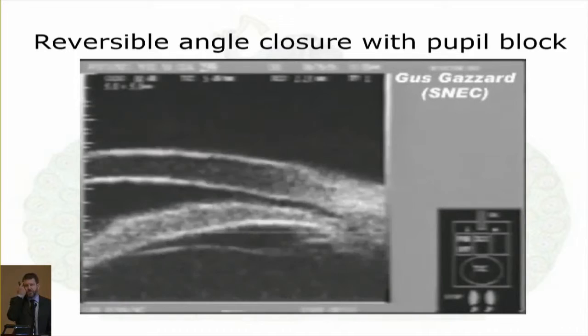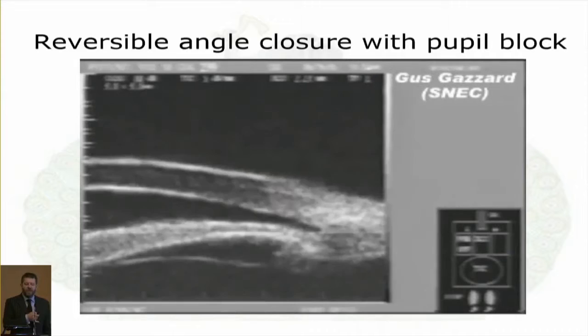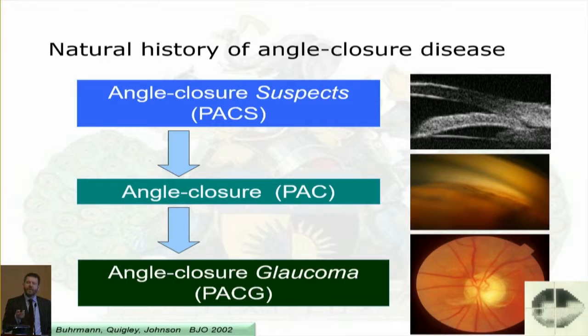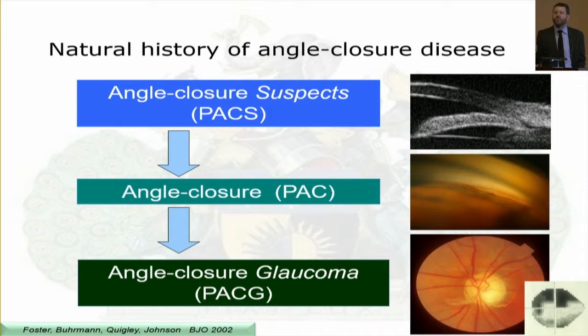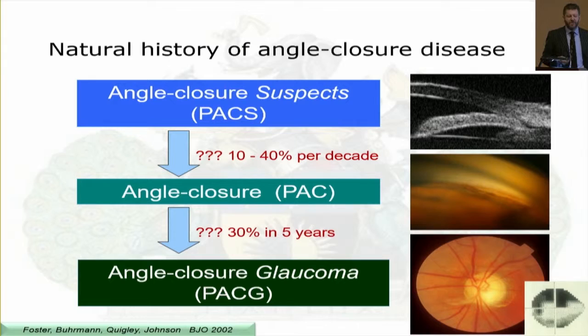We need to be able to do gonioscopy in the dark, because iridotrabecular contact changes very rapidly and exquisitely with illumination levels — a closed angle can open when room lights come up. Primary angle closure suspects are those with 180 degrees of iridotrabecular contact but normal pressure and no peripheral anterior synechiae. That progresses to angle closure with raised pressure and/or peripheral anterior synechiae, then some progress to angle closure glaucoma.